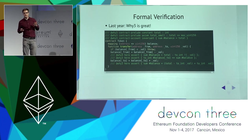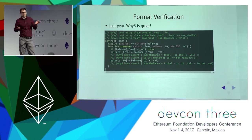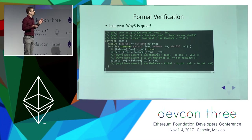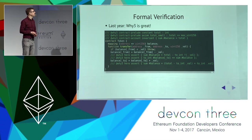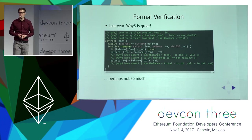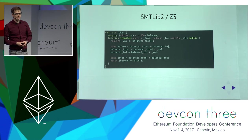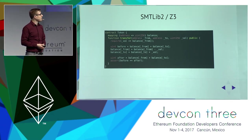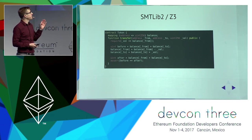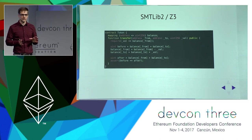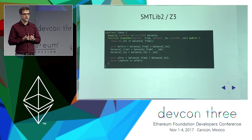The harder it is to use, the easier it is to make mistakes. Also, formal verification is only useful if people understand what is actually being proven — the statements proven must be understandable by humans. So we took a step back and reconsidered. We replaced Y3 with a tool called an SMT solver. SMT solvers are less powerful than general theorem provers, so in this contract we cannot prove that the sum of all balances is constant, but we can prove that the sum of the two balances being modified is constant.